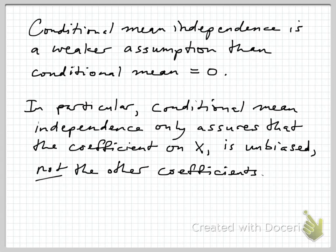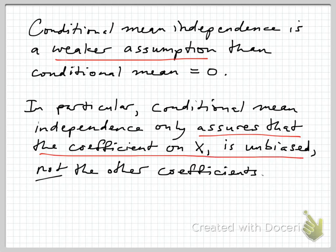This conditional mean independence assumption is a weaker assumption than the one we had been making heretofore, which was that the conditional mean of the error term is 0. If the conditional mean of the error term is 0, it assures that all the coefficients — on x1, x2, x3, all the regressors — are unbiased. But with conditional mean independence, we might end up with biased coefficients on the control variables, and we don't really care so much about that because our main issue is to assure that the coefficient on x1 is unbiased. The other variables are in there essentially just as control variables.